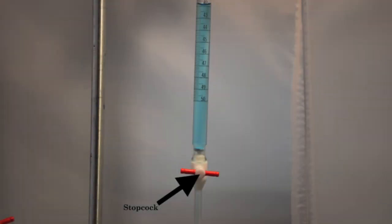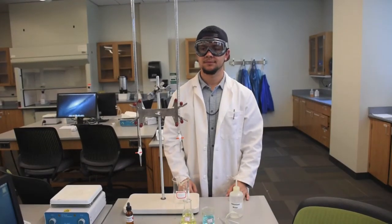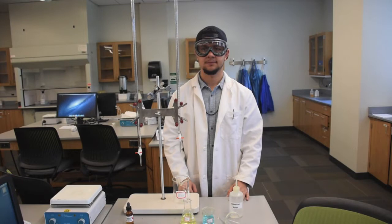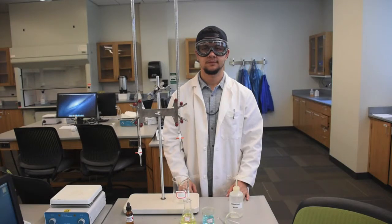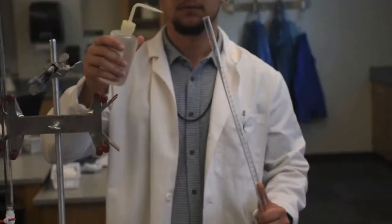Burettes are typically used in titration experiments. This is where a solution with a known concentration is used to determine the concentration of another compound. In order to properly use a burette, proper rinsing and washing must be done to ensure there are no molecules or particles that could potentially interfere with what is being measured. Washing is essential. Never assume your glassware is clean.